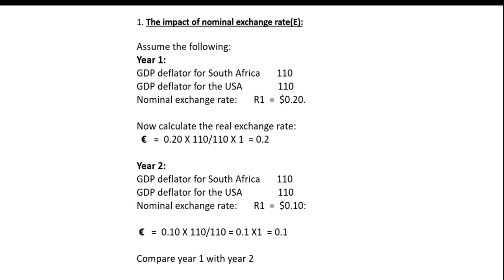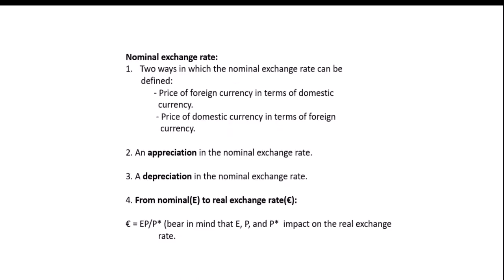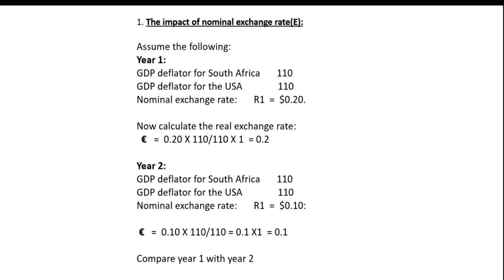Substituting the figures: real exchange rate equals 0.20 times 110 divided by 110, which gives 0.2. In year two, the GDP deflators remain the same at 110, but the nominal exchange rate changes — for one rand you now only get 0.1 dollars instead of 0.2 dollars. This represents a depreciation. Calculating year two: 0.10 times 110 divided by 110 equals 0.1. Comparing year one to year two, there has been a real depreciation — the relative price of our goods compared to USA goods has declined.